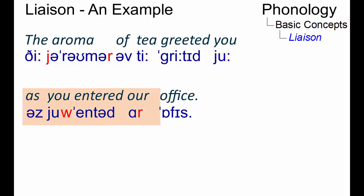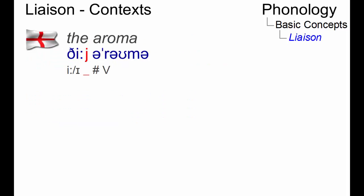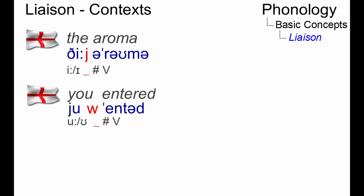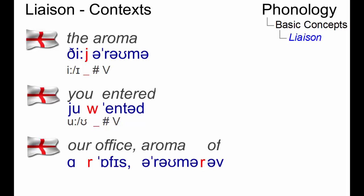Thus, we can identify three linking phonemes in present-day English: where a final high front vowel precedes another vowel, where a high back vowel precedes another vowel, and the insertion of R. In each case, the additional phoneme bridges the gap between two vowels.